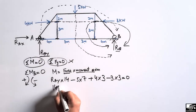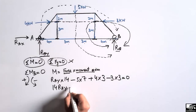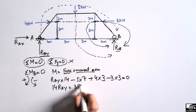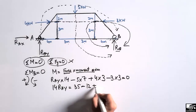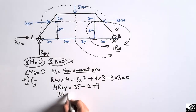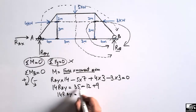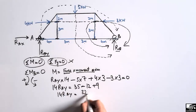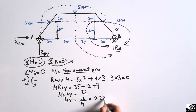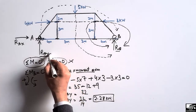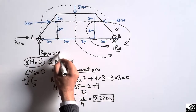Moving all values to the right side: R_AY times 14 equals 35 minus 12 plus 9, giving 32. So R_AY equals 32 divided by 14, which gives us 2.28 kN. This is the vertical reaction at support A, acting in the upward direction.